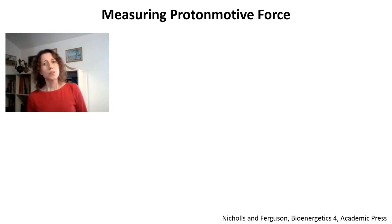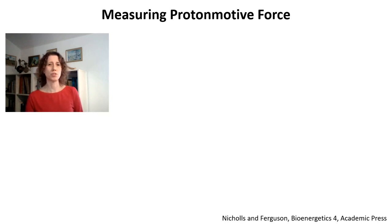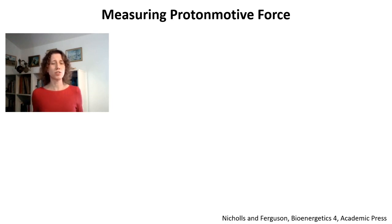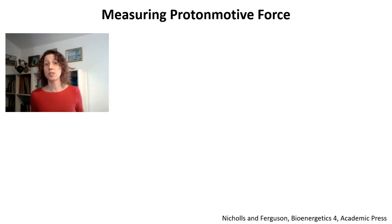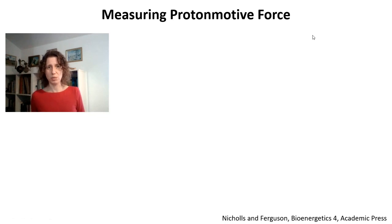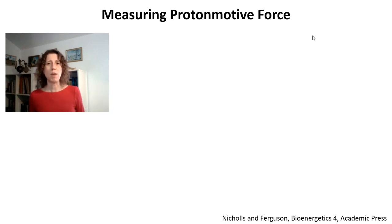Hi again. In the last video we talked about how to measure oxygen consumption and estimate changes in oxidative phosphorylation in isolated mitochondria or permeabilized cells. But as I told you, oxidative phosphorylation happens because of the proton circuit. So sometimes it makes a lot of sense to also measure proton motive force, because that's going to be the force involved in the synthesis of ATP, even though oxygen consumption is generally the easiest, most direct, and most precise manner to estimate changes in oxidative phosphorylation.